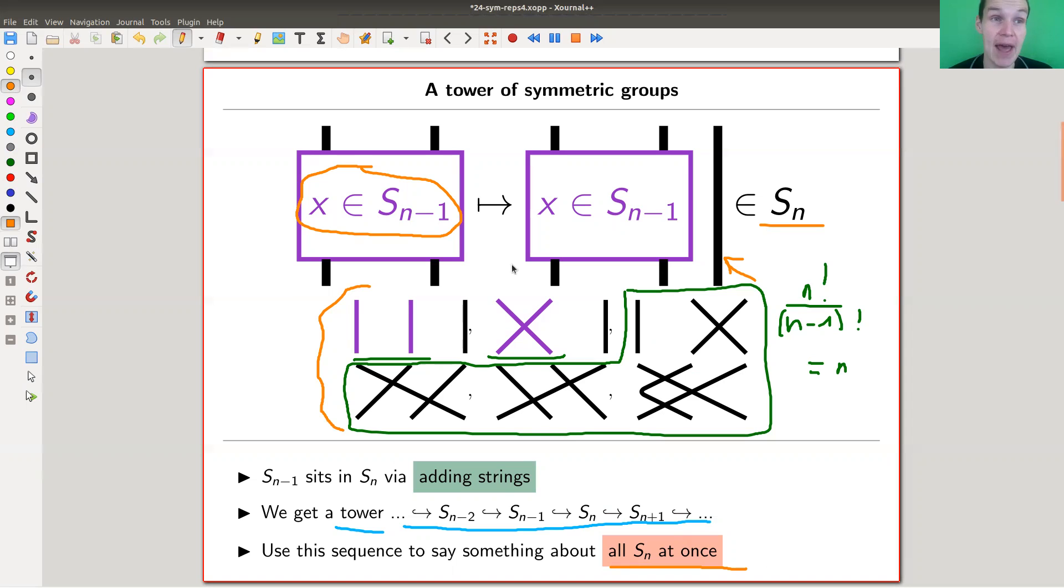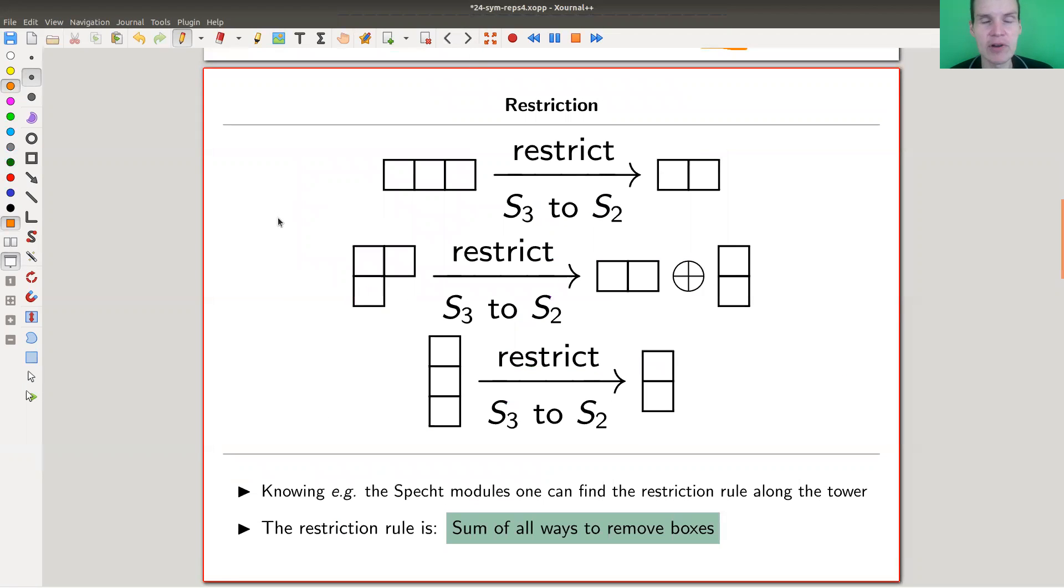We want to use induction and restriction. Restriction is a way to go from S_3 to S_2, for example, and induction would be the way to go from S_3 to S_4. We would like to study induction and restriction on what we know by now is a good indexing set for the simples: Young diagrams.